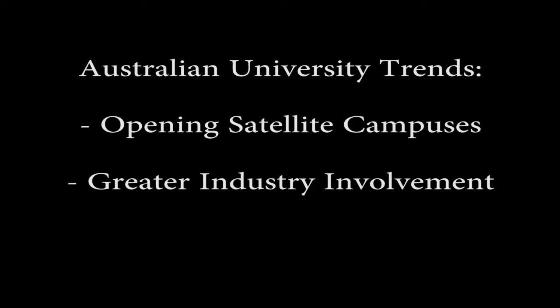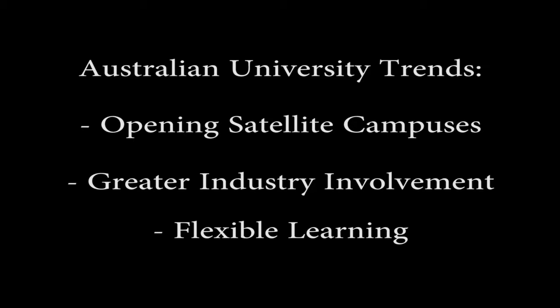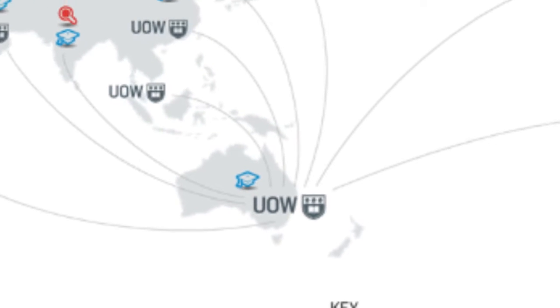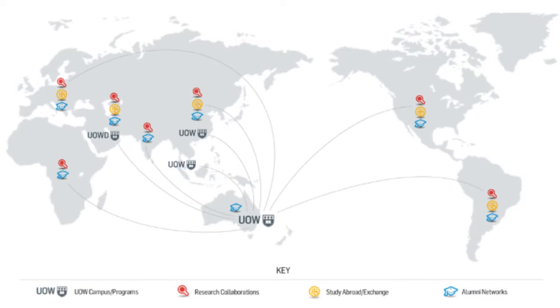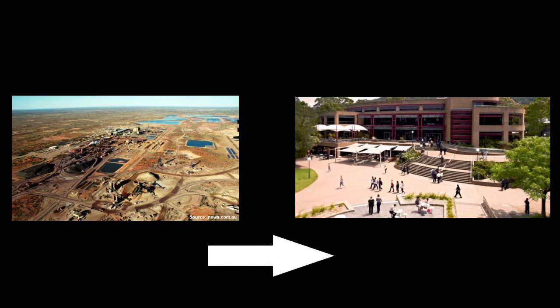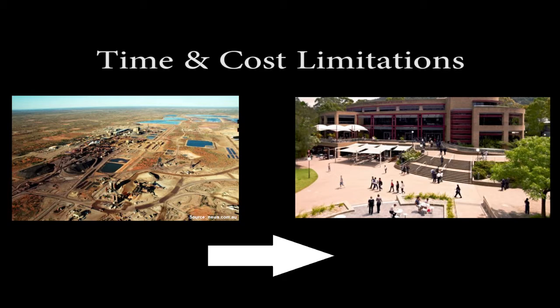Australian universities have been adapting their practices by opening satellite campuses, requesting greater industry involvement to facilitate learning, and adjusting to a flexible learning culture. With campuses at a great distance apart, how can we ensure equivalent learning experiences? How do we get the students and staff to interact? Industry is interested in helping students grow, but they too find it difficult to find the time to justify the cost of travelling to campus, especially true for regional campuses.